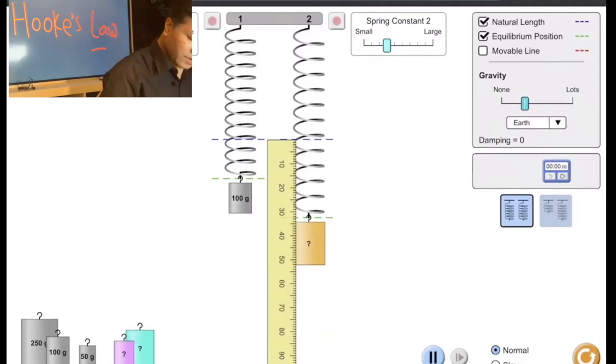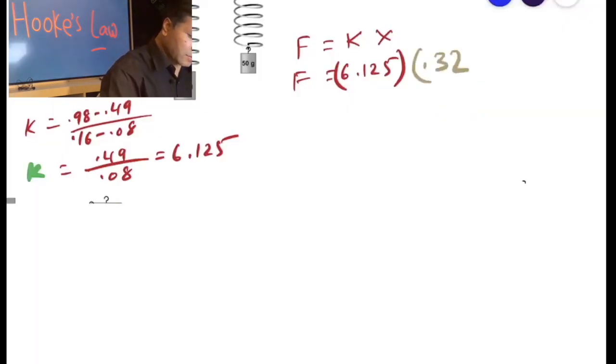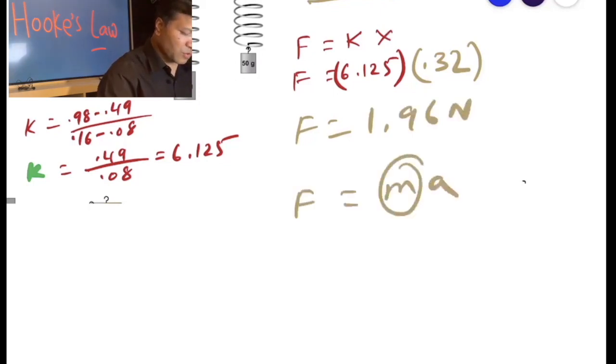I'm going to recheck. This looks like 0.32, because 32 centimeters is 0.32 meters. So that means F is 6.125 times 0.32, which is 1.96, 1.96 Newtons.